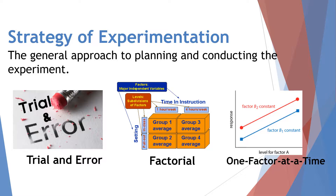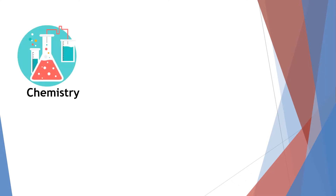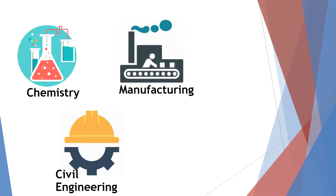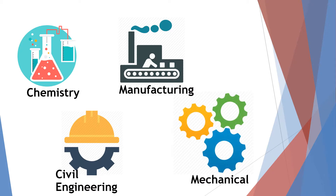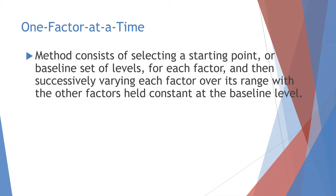The most awaited part is the one factor at a time. OFAT is commonly used as a design of experiment in the fields of chemistry, civil engineering, manufacturing engineering, mechanical engineering, and other science research. One factor at a time is a method consisting of selecting a starting point or base set of levels for each factor and then successively varying each factor over its range with the other factors held constant at the baseline level.